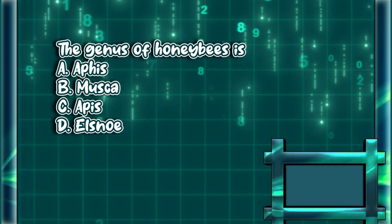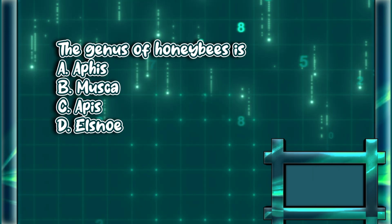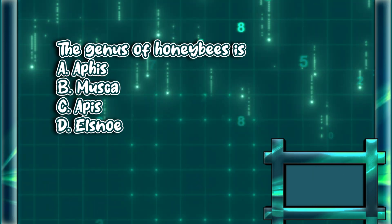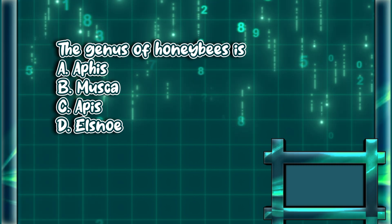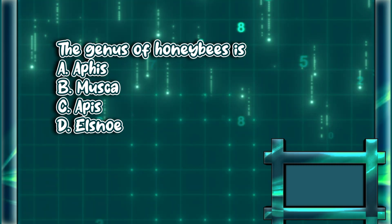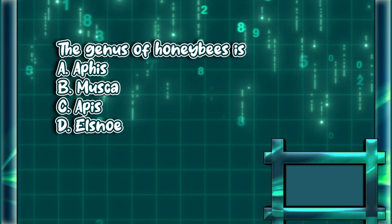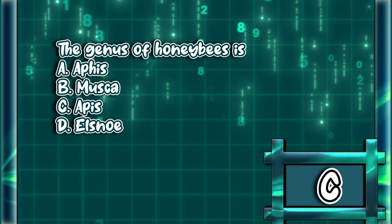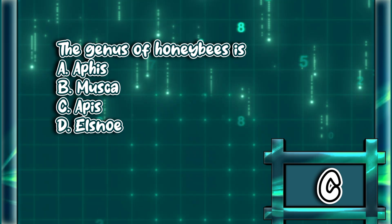The genus of honeybees is. A. Aphis. B. Musca. C. Apis. D. Elsno. The answer is letter C.